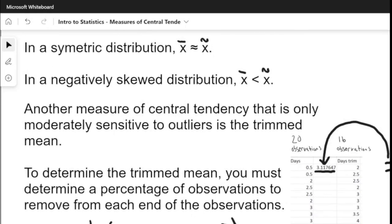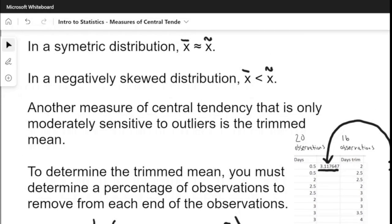In a symmetric distribution, x-bar is approximately equal to the sample median. Meanwhile, in a negatively skewed distribution, the sample mean is less than the sample median because you have that trailing lower tail and then a shorter upper tail where most of the data observations are located.